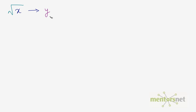By definition, a square root of a number — in this case y — is a number when multiplied by itself gives us the original number of which you calculated the square root of. So square root of x is y. Let's say we have to calculate the square root of 4. By definition, square root of 4 is a number which when multiplied by itself gives us 4. The only number that when multiplied by itself gives us 4 is 2.